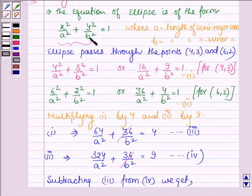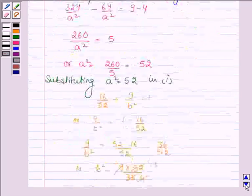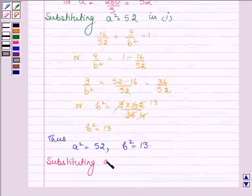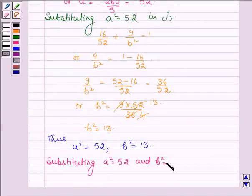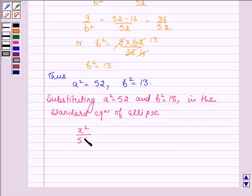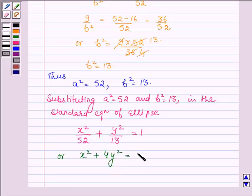Substituting a² = 52 and b² = 13 into the standard equation of the ellipse — where the major axis is on the x-axis and passes through the points (4, 3) and (6, 2) — we get x²/52 + y²/13 = 1. This can also be written by multiplying both sides by 52 as x² + 4y² = 52.